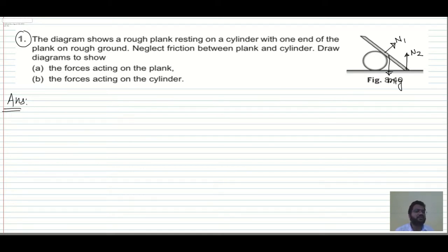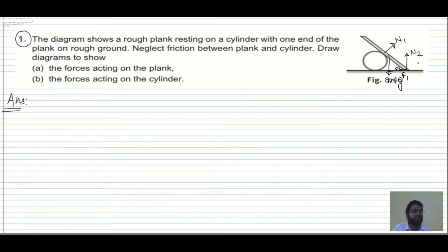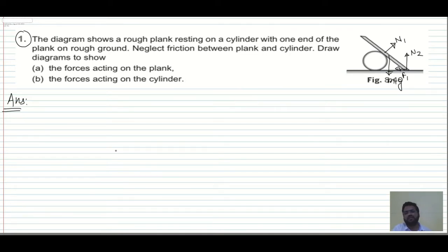That friction force will be acting on this plank in the forward or leftward direction. Friction force will act in a forward direction because if the ground were smooth, this rod would go in the backward direction. So friction has to prevent that motion. So how many forces are acting on this plank? 1, 2, 3, 4. So I will just draw what is called as the free body diagram for the plank — FBD for plank.